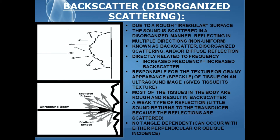The second type of ultrasound scattering is known as backscatter, and this is a disorganized type of scattering. This is due to a rough or irregular surface. The sound is scattered in a disorganized manner, reflecting in multiple directions non-uniformly.